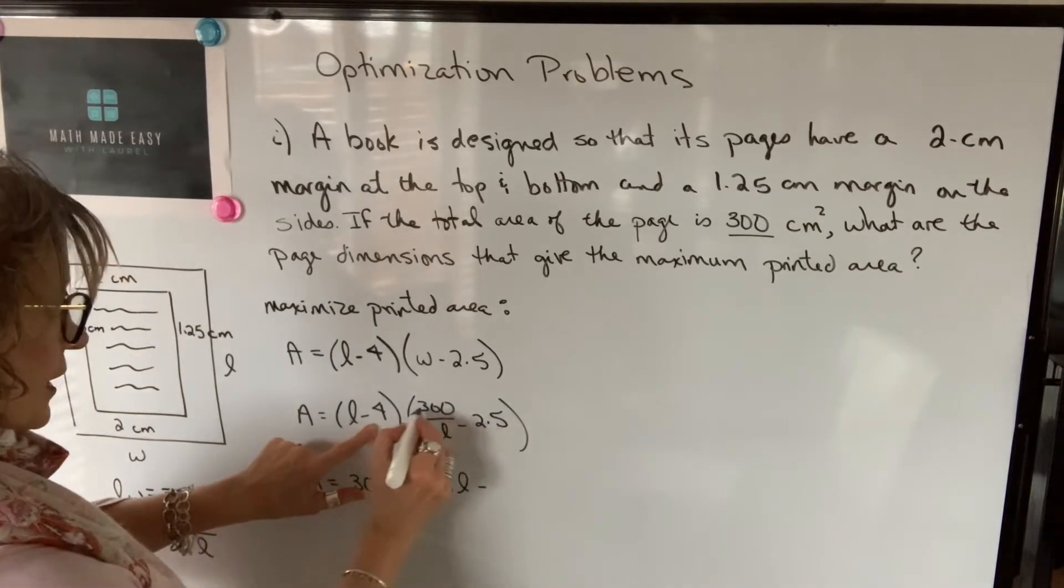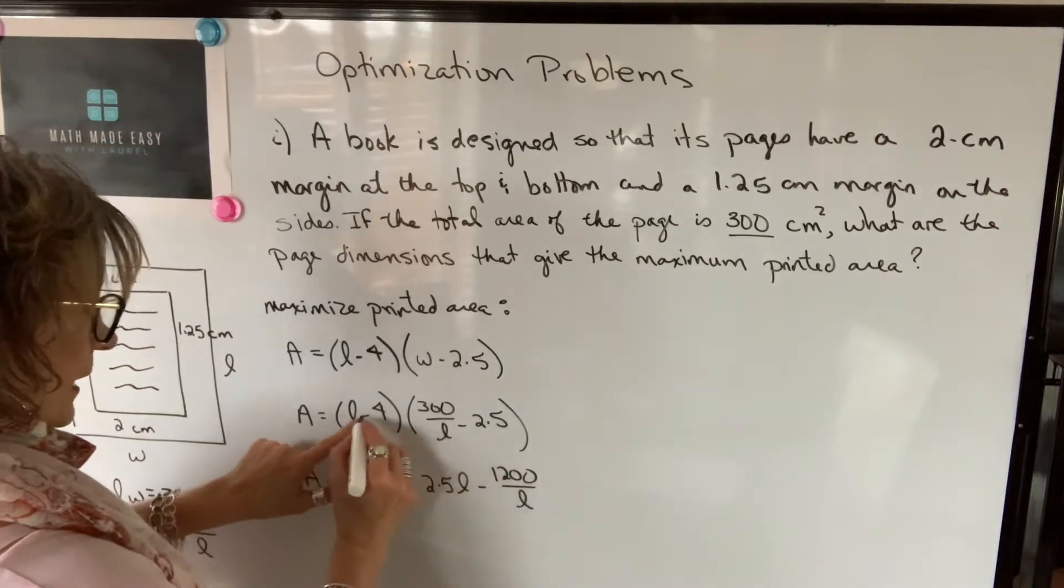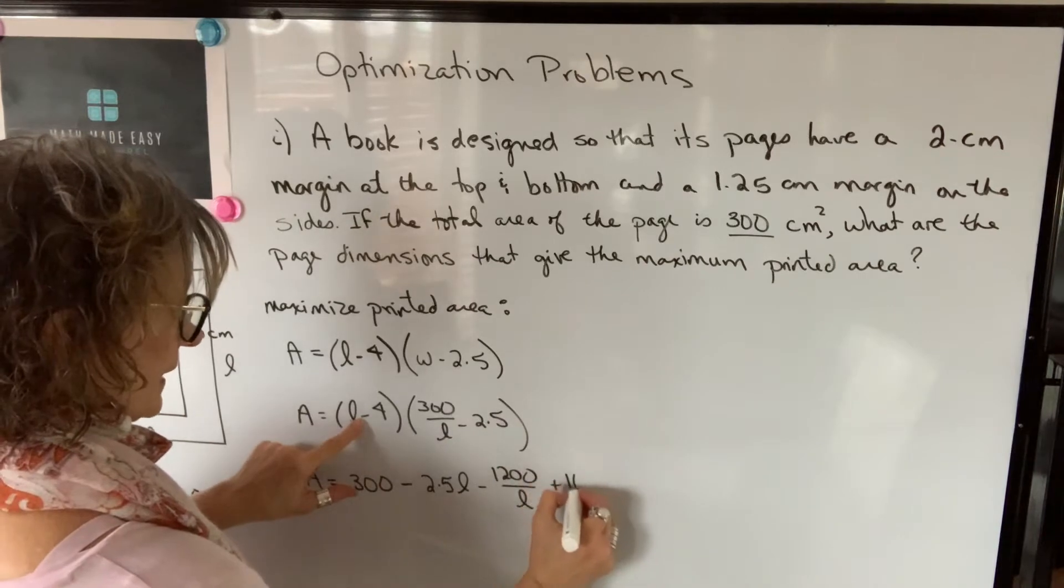Minus 4 times 300 divided by L will be 1200 divided by L. Minus, minus gives me a plus, 4 times 2.5 is 10.